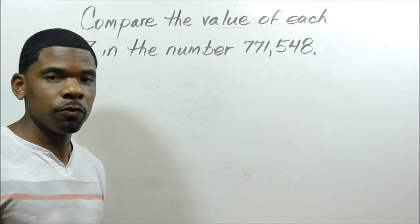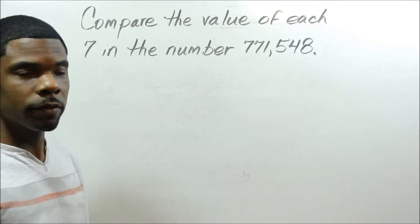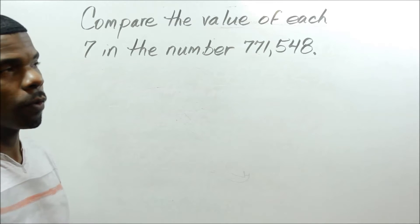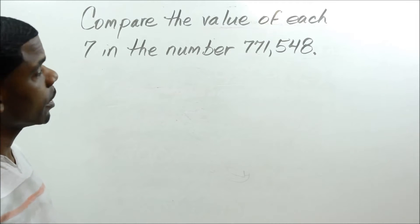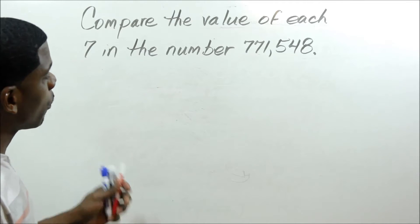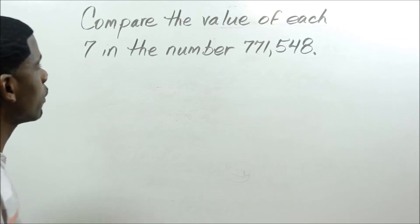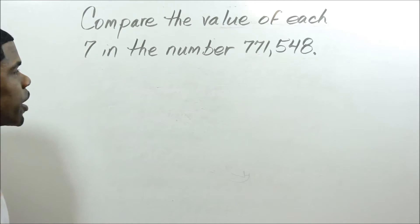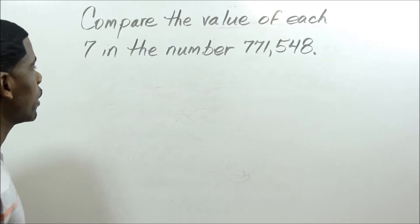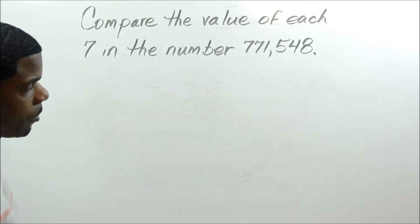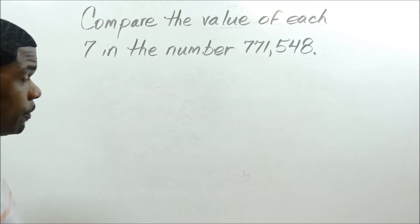We're looking at the end of module 1 — it's like the final exam for module 1. Here's question number 1. It says: compare the value of each 7 in the number 771,548.